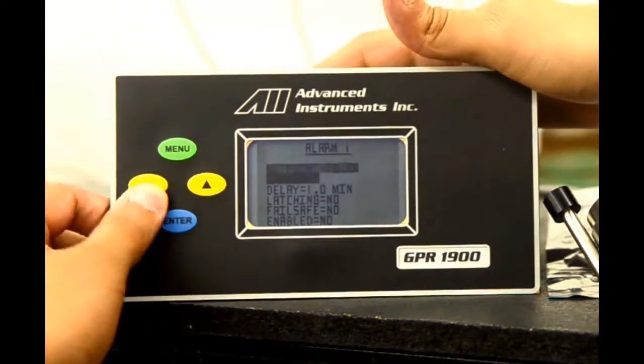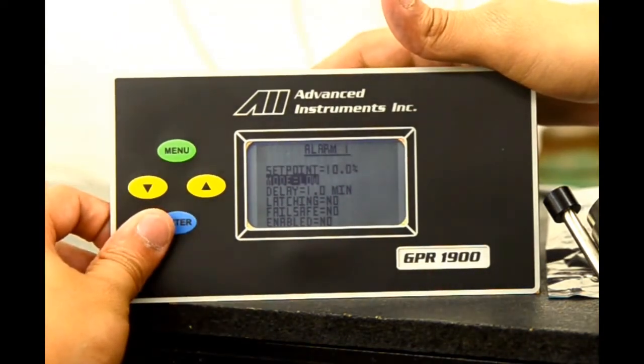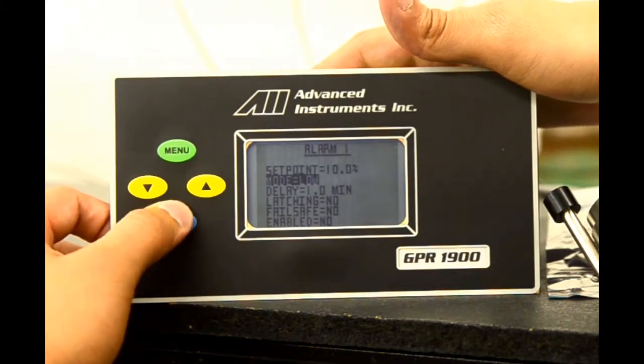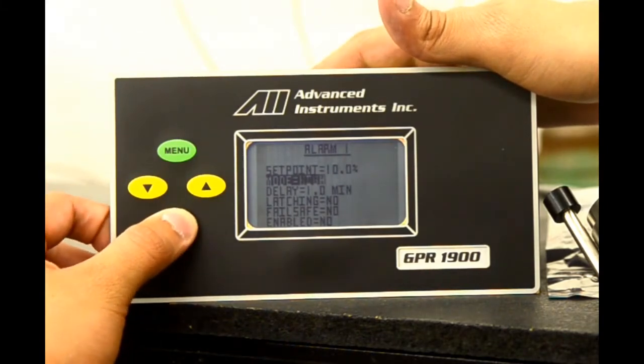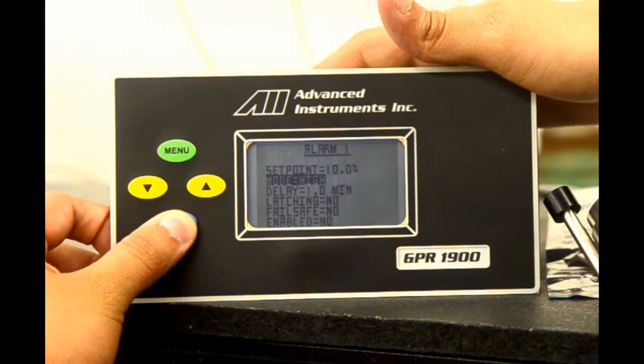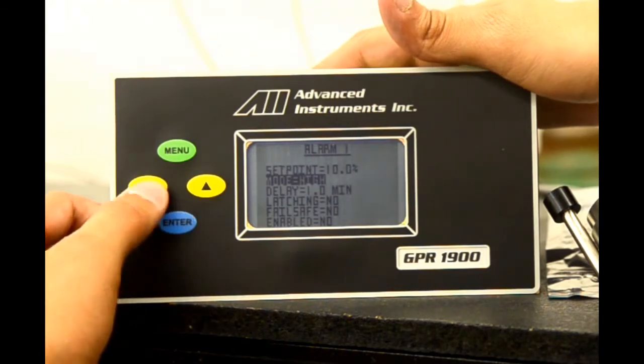Currently, the mode is low. This means that if the oxygen is below 10%, the alarm will fire. We select enter to set it as a high alarm. This means that if the gas is above 10% oxygen, the alarm will be enabled.